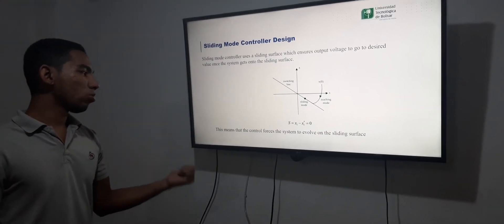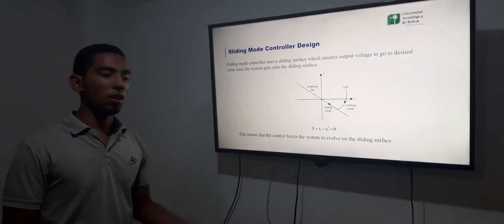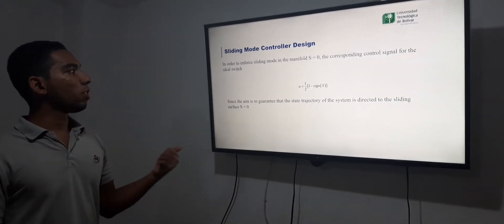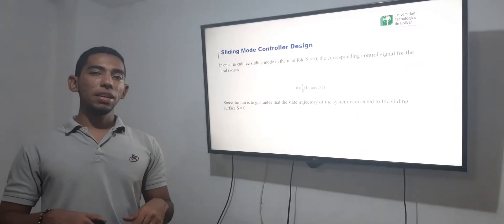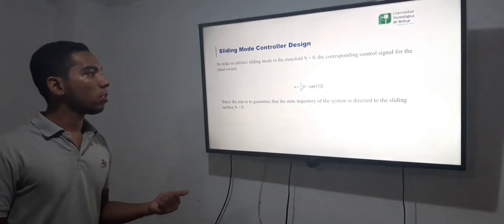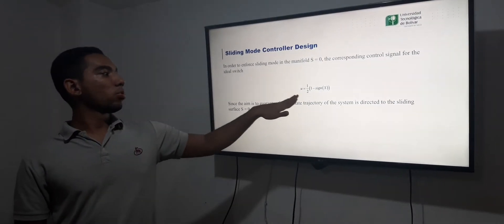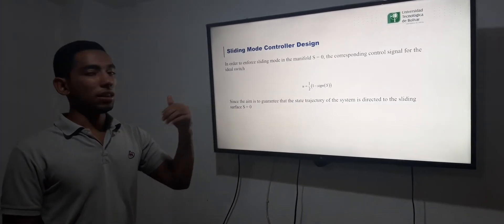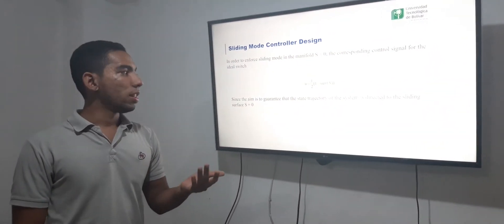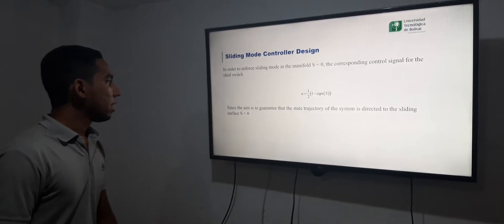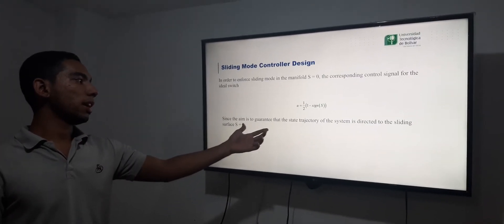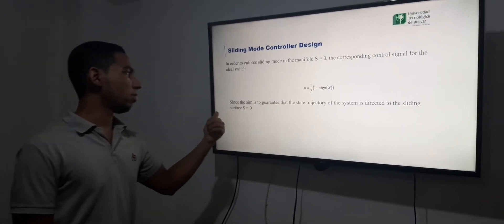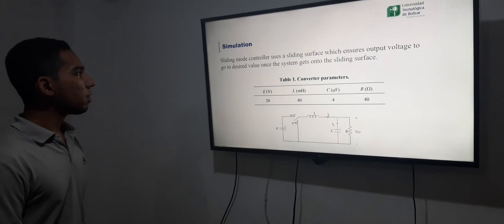This means that the control forces the system to evolve on the sliding surface. In order to enforce the sliding mode to maintain the error equals zero, the control law of the system is this, where we control the switching of the transistor. Since the aim is to guarantee that the trajectory of the system is directed to the sliding surface.